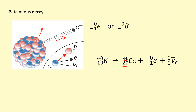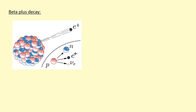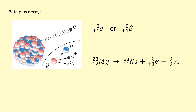In beta plus decay, the nucleus has too many protons. A proton turns into a neutron, which stays inside the nucleus, and a positron is emitted. To conserve lepton number, an electron neutrino is also emitted. The symbol for a positron is basically an electron with a positive charge, also written as beta plus. Here's an example with magnesium: one of the protons turns into a neutron, so the proton number goes down, but the nucleon number doesn't change because the total number of nucleons remains the same.